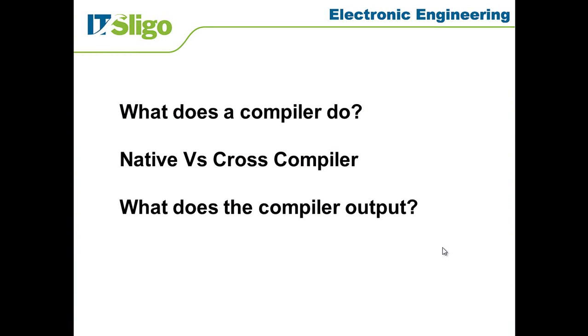Firstly, I'm going to explain to you what the compiler actually does. Then I'm going to tell you about two different types of compiler: one is a native compiler and the other is a cross compiler. It's very important that you understand the distinction between the two. Finally, we want to have an idea about what the compiler actually outputs and what sort of files we expect to get from the compiler.